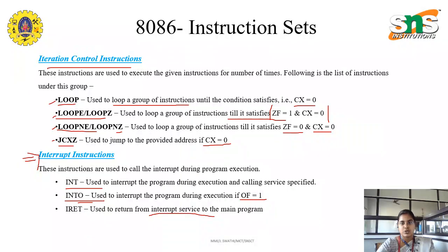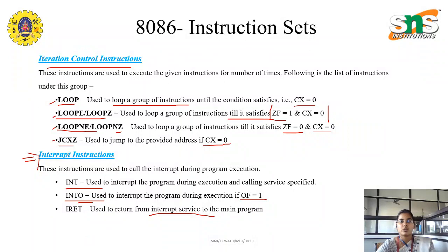To summarize all the instructions: first, we have data transfer instructions where we can do transfer from word to word, byte to byte, and operations like shifting, moving, and pushing. After that, we have arithmetic operations where we can perform addition, subtraction, multiplication, and division. Apart from that, we have bit manipulation, which includes logical and shifting operations. Then we have string manipulation, and after that, program execution instructions which include loop instructions with certain conditions.